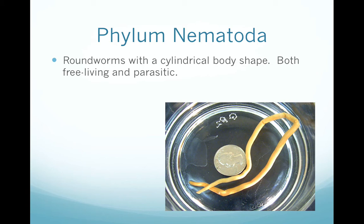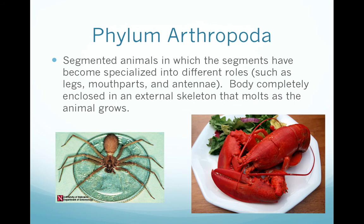Phylum Arthropoda includes all animals with segments that have become specialized into different roles — segments can become legs, mouth parts, or antennae. The body is completely enclosed in an external skeleton, and that skeleton will molt as the animal grows. This includes insects, spiders, ticks, and also lobsters and crabs.